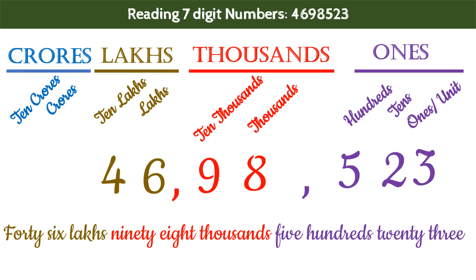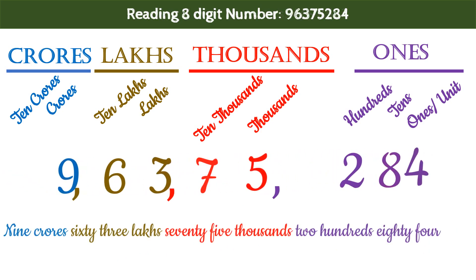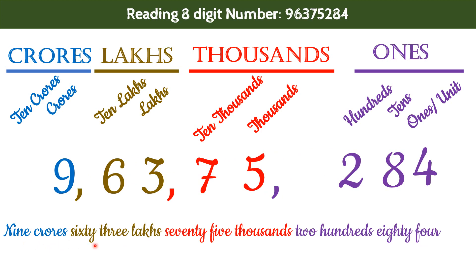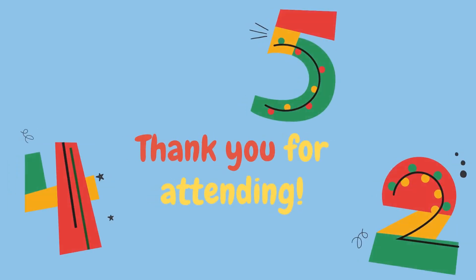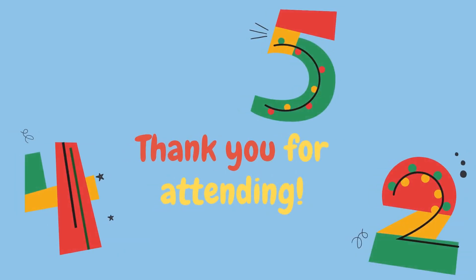If you do it correctly, then the first number will be read as 46,98,523 and the second number will be read as 9,63,75,284. Thank you so much for watching this lecture. Kindly do like, share and subscribe to our channel, as it encourages us to make more videos like this. Take care, see you soon.